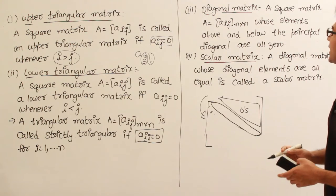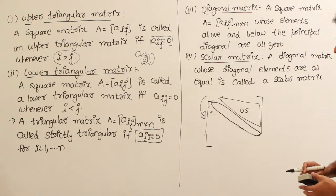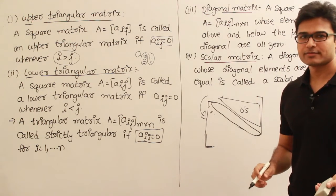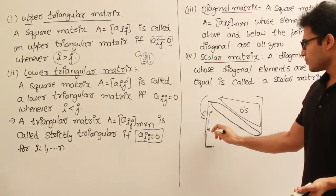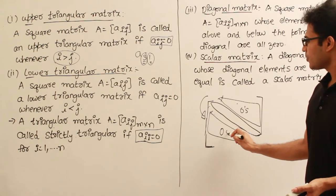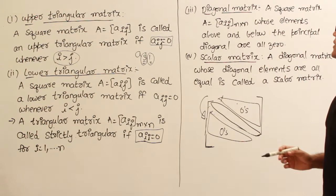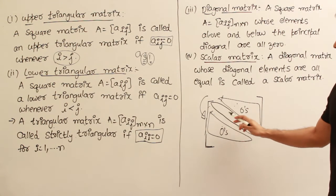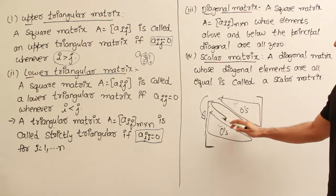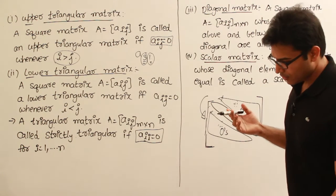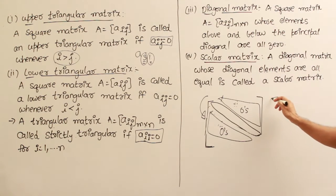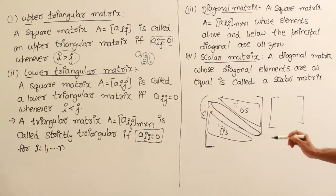The next important matrix is the diagonal matrix. If a matrix is both upper triangular and lower triangular, we can call it a diagonal matrix. So if the elements both above and below the principal diagonal are zeros, we can call it a diagonal matrix. For all i ≠ j — all the non-principal diagonal elements — if they all happen to be zeros, then we can call it a diagonal matrix. For example, you can think of this one as a diagonal matrix.